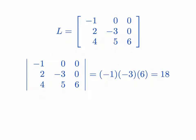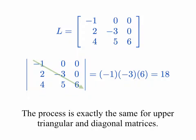For example, we have a lower triangular matrix with -1, -3, 6 on the diagonal, and 2, 4, and 5 below the diagonal, with all zeros above. The determinant of this matrix is simply the product of the diagonal entries: (-1) times (-3) times 6, which equals 18. This process is exactly the same for upper triangular and diagonal matrices — simply the product of the diagonal entries.